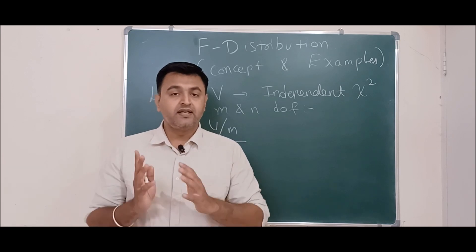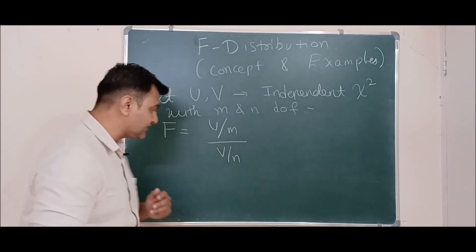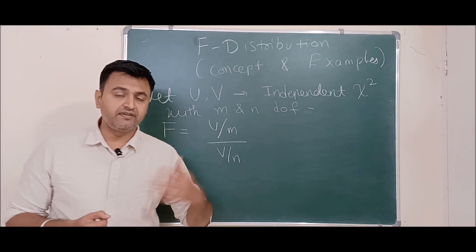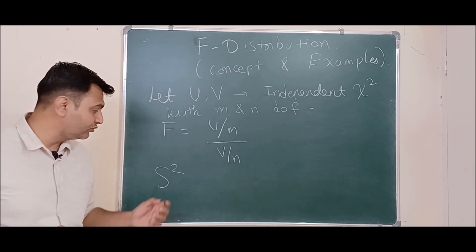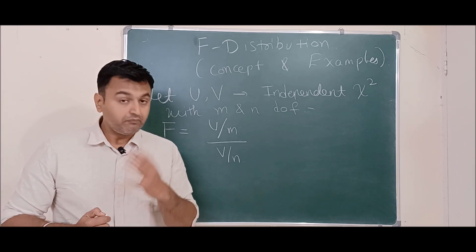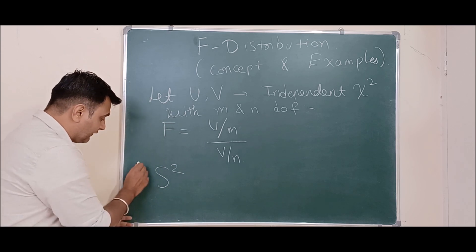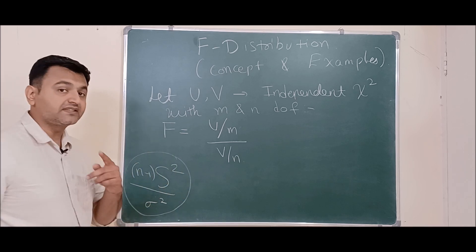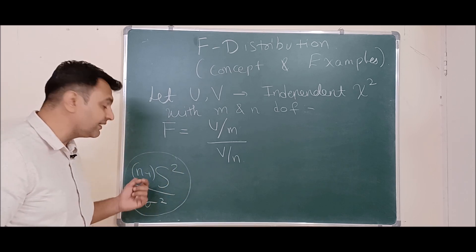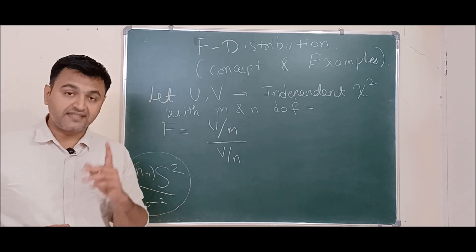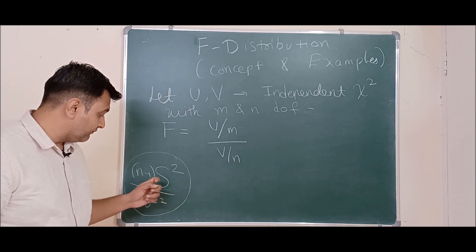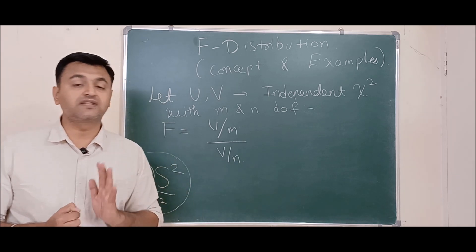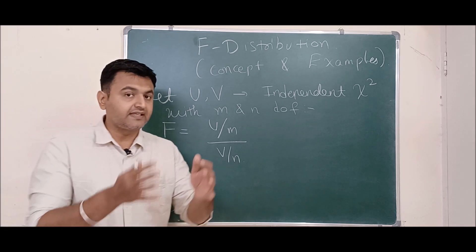So sample mean is done. Next comes sample variance. For sample variance S², we do not have a nice theorem like the central limit theorem. But what we observed is that if you multiply by n minus 1 and divide by sigma squared, then this random variable follows chi-square distribution with n minus 1 degrees of freedom. So when playing with a single sample variance, multiplied by n minus 1 divided by sigma squared, it follows chi-square. That's when we use chi-square.